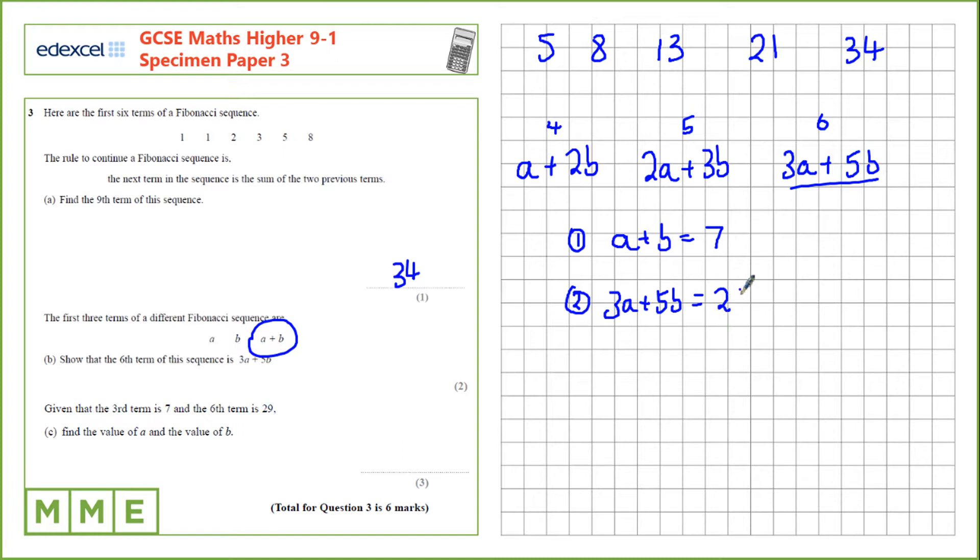and we're given that that's 29. Now let's solve these simultaneously. The first thing I'm going to do is multiply this equation by 3. So 3 lots of equation 1, 3a plus 3b equals 21. Now I can subtract this equation from this equation. So 3a take 3a is 0, 5b take 3b is 2b, and 29 take 21 is 8. If 2b equals 8, we need to divide by 2 to give b equals 4.